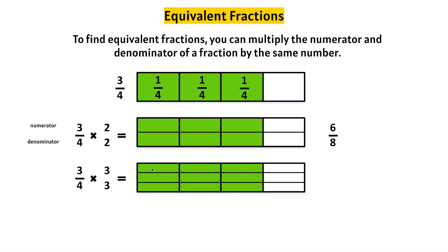Let's count how many are shaded in: one, two, three, four, five, six, seven, eight, nine. Nine-twelfths is equivalent to three-fourths. Let's multiply straight across — three times three is nine, four times three is twelve.